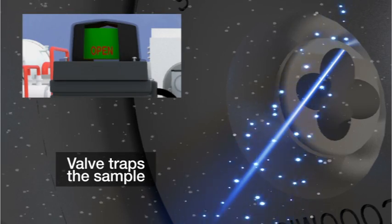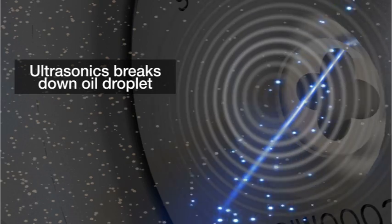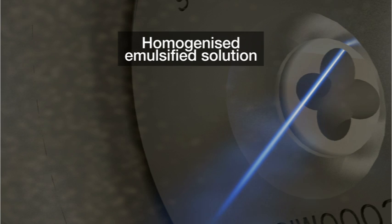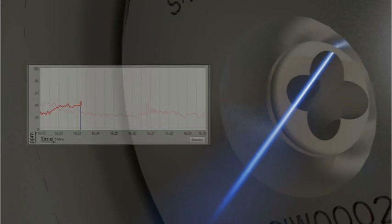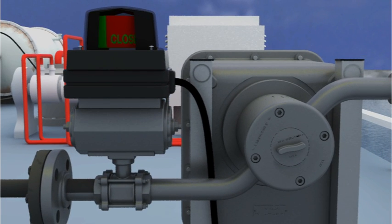Once the sensor has been cleaned, the valve traps a sample in the sample chamber and, using the ultrasonics, breaks down the oil droplets and leaves a homogenized emulsified solution. The PPM is then measured again and this value is recorded and can be used to compensate the real-time readings should oil droplet size be an issue. The valve then reopens and the measurement cycle starts again.